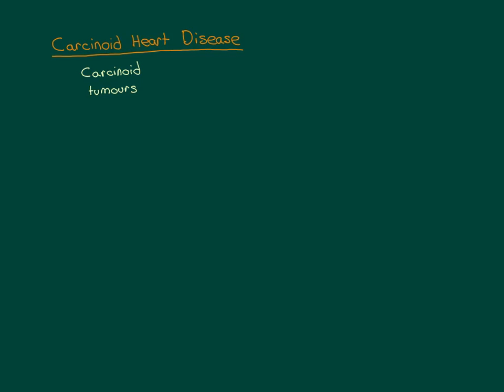All carcinoid tumours — and there are multiple different types located at different places around the body — are neuroendocrine tumours fundamentally. The set of all carcinoid tumours is contained within the set of all neuroendocrine tumours, but not all neuroendocrine tumours are carcinoid tumours. There is some additional property of carcinoid tumours that other neuroendocrine tumours don't have.